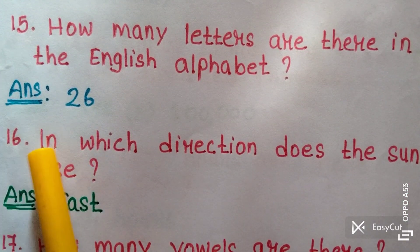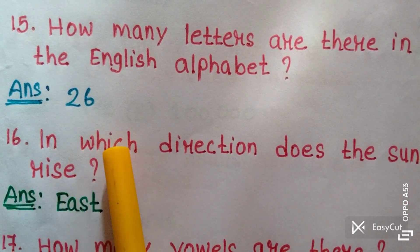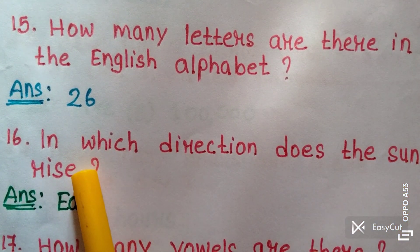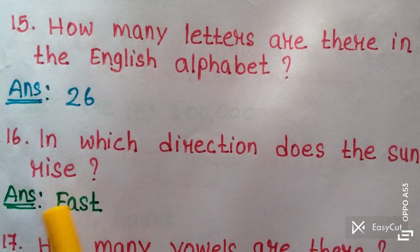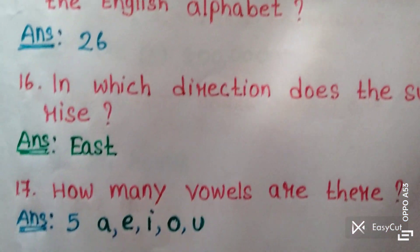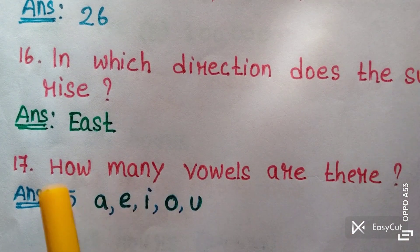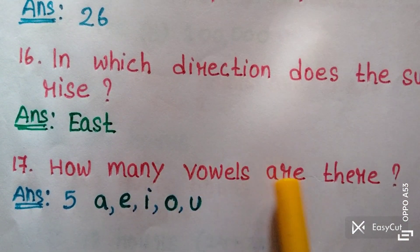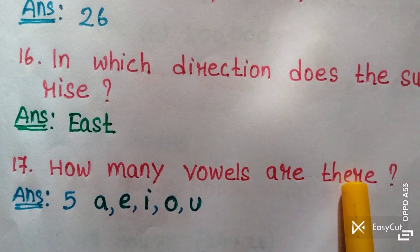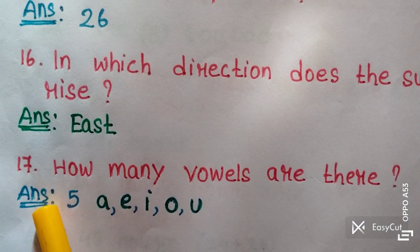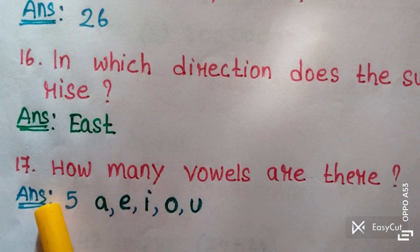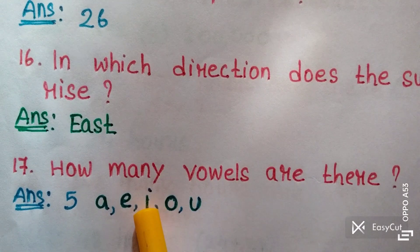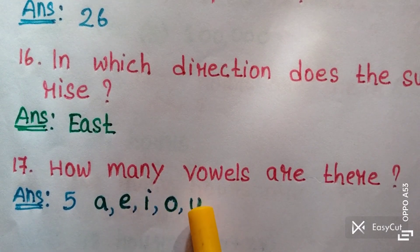Question sixteen: In which direction does the sun rise? Answer: East. Question seventeen: How many vowels are there? Answer: 5. They are A, E, I, O, U.